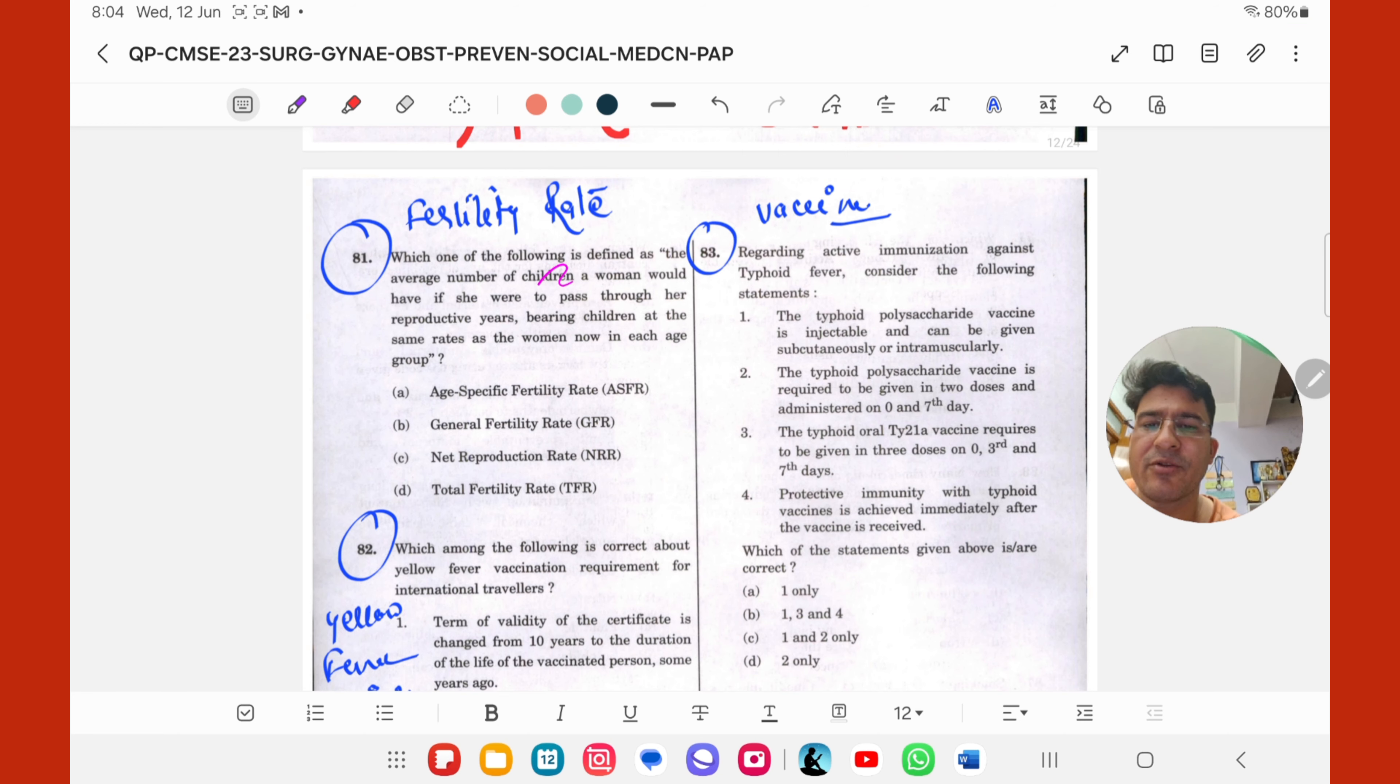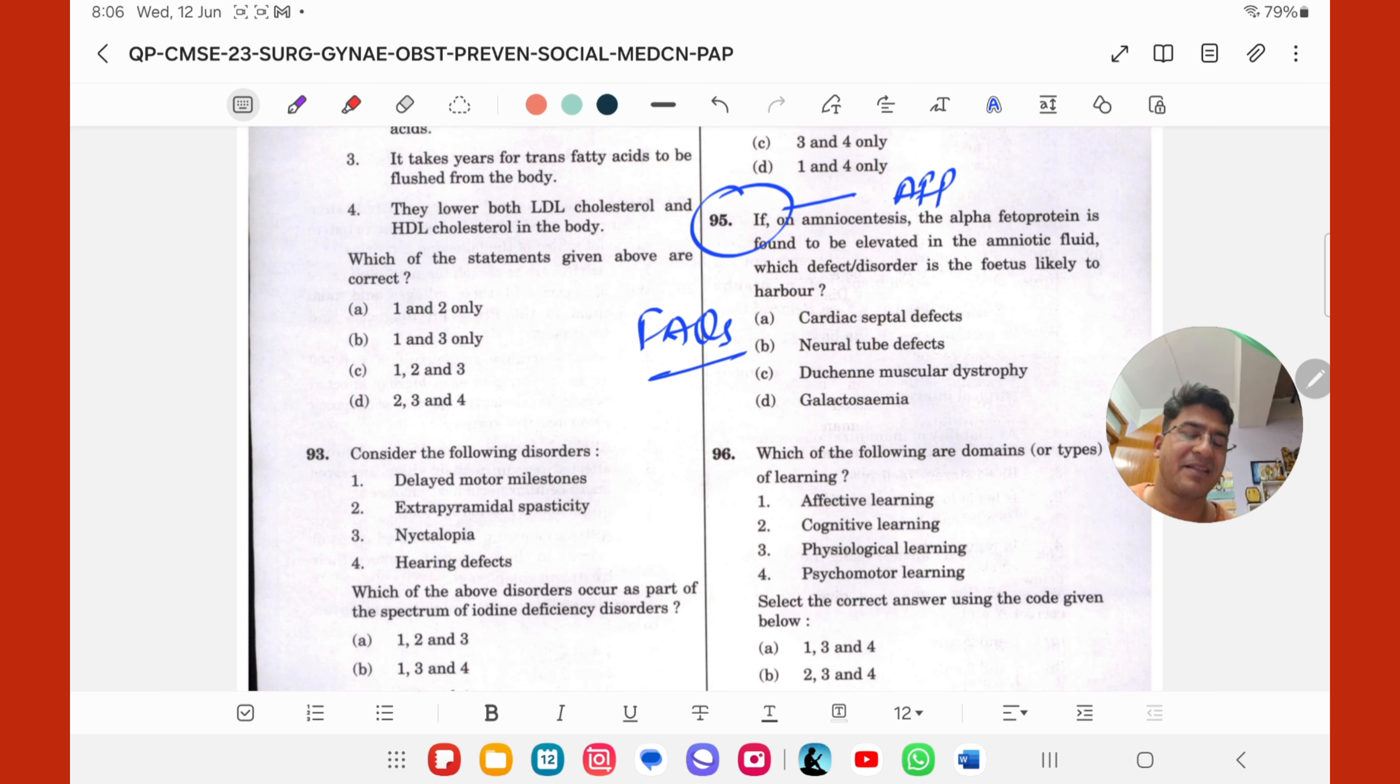So this is the question asked in CMS 23. Isme dekho diya hua hai children. Right. So ya to isme TFR hoga ya GFR hoga. Now aage kya diya hua hai. Pass through reproductive age group. Bilkul thik hai. Reproductive age group to sab mein aayega. Bearing children at same rate. Yani isme specific rate ki baat kar. TFR is more specific. So answer of this question is D.